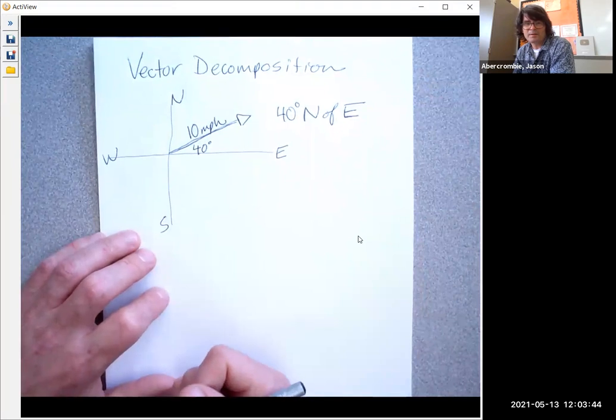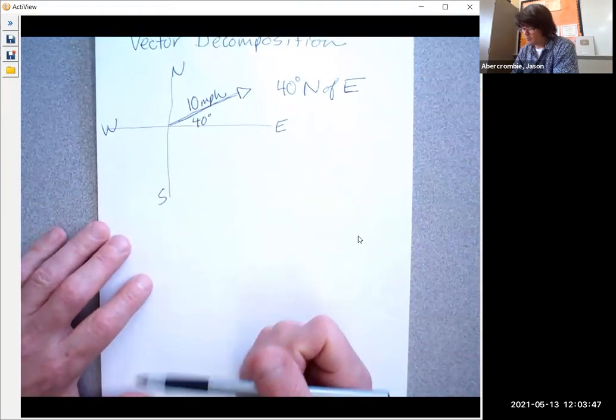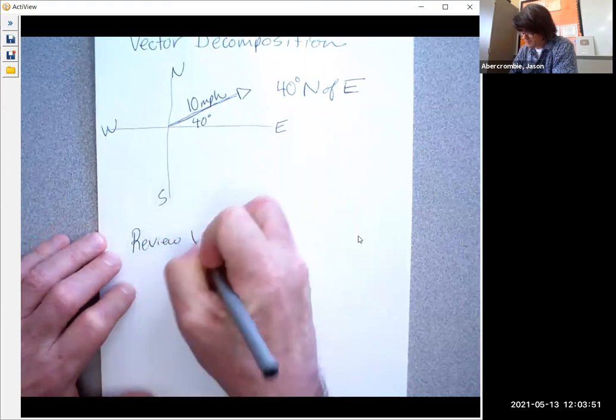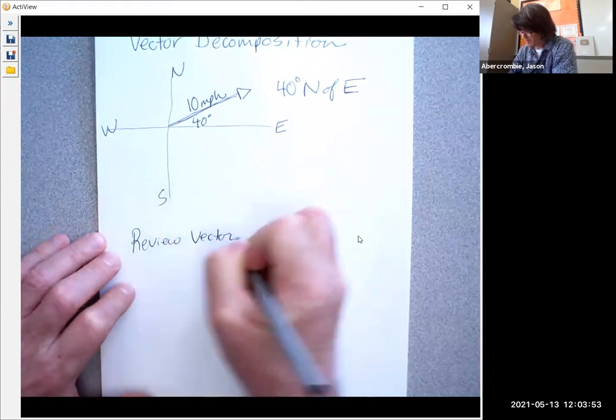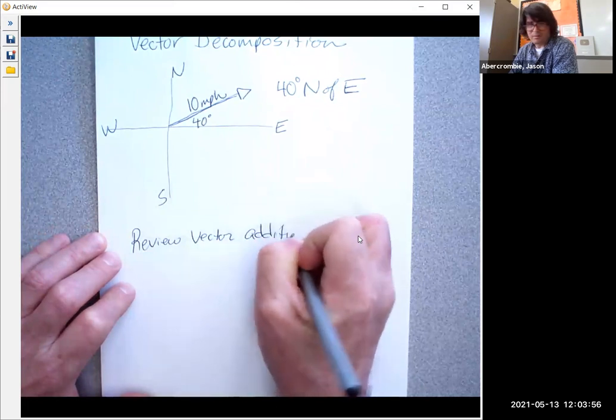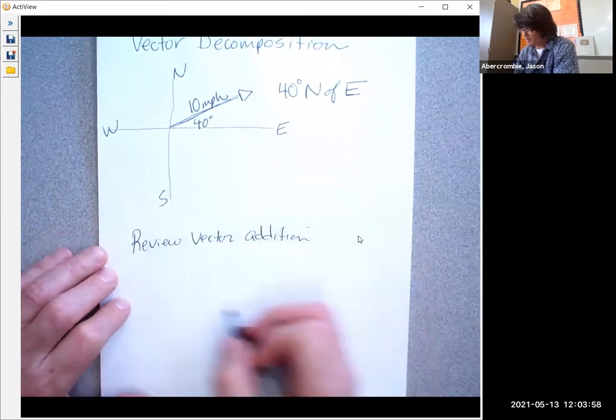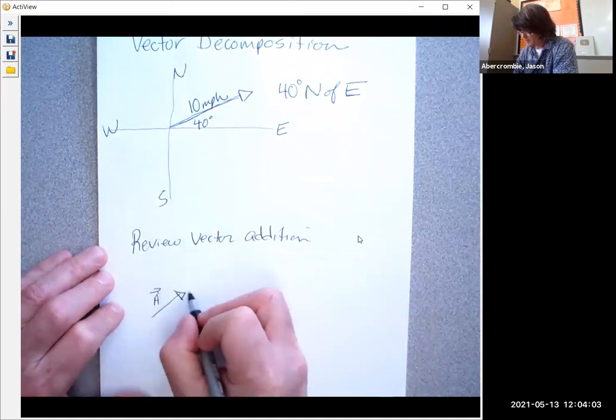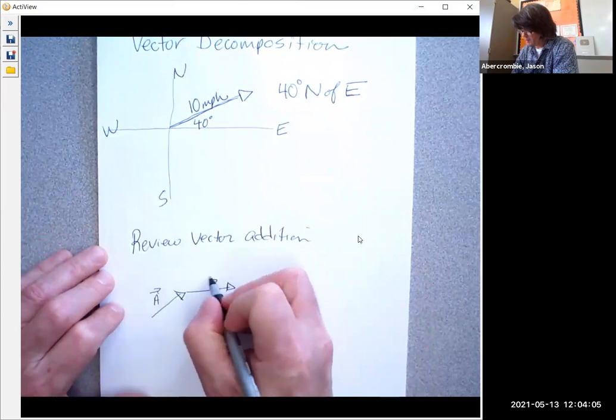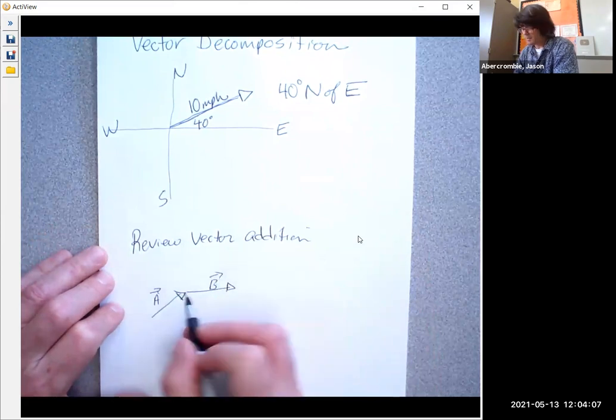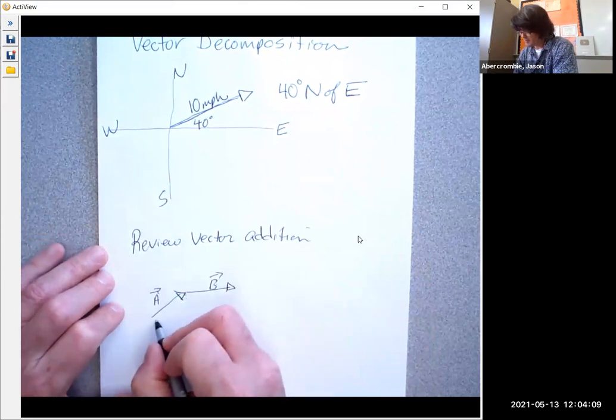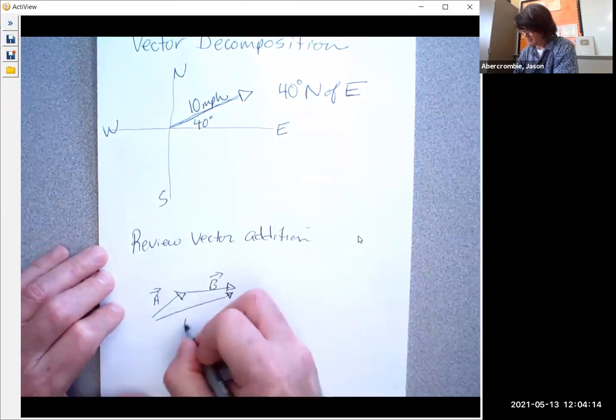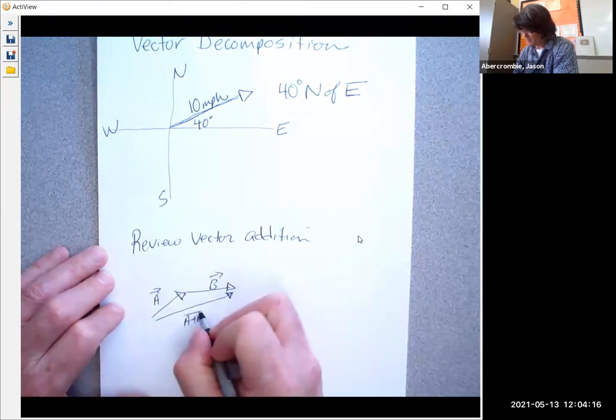What we're going to do is quickly review vector addition, and we'll come back to my problem. Vector addition looks like this. If you have vector A and vector B, you always add them head to tail. Then the resultant is always head to head and tail to tail. So this is head to head, this is tail to tail. This is vector A plus B.